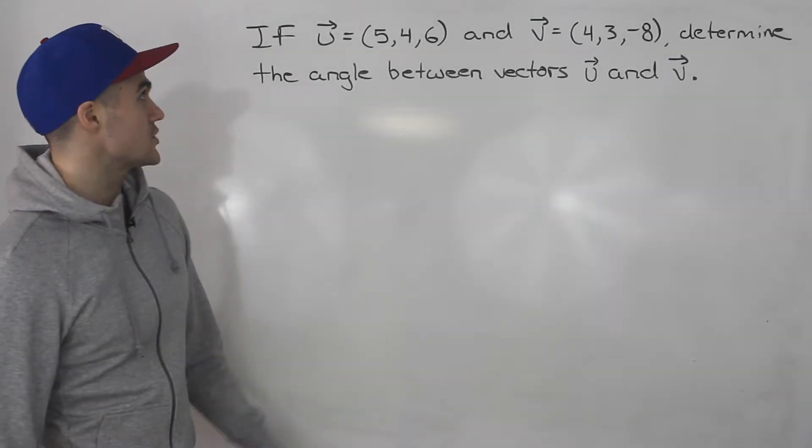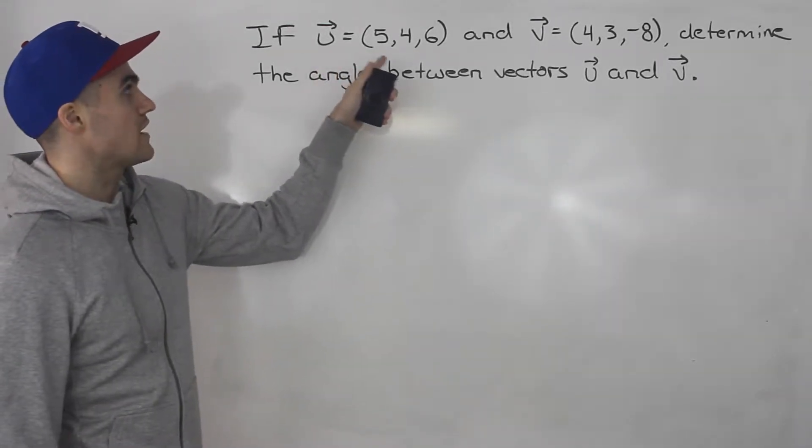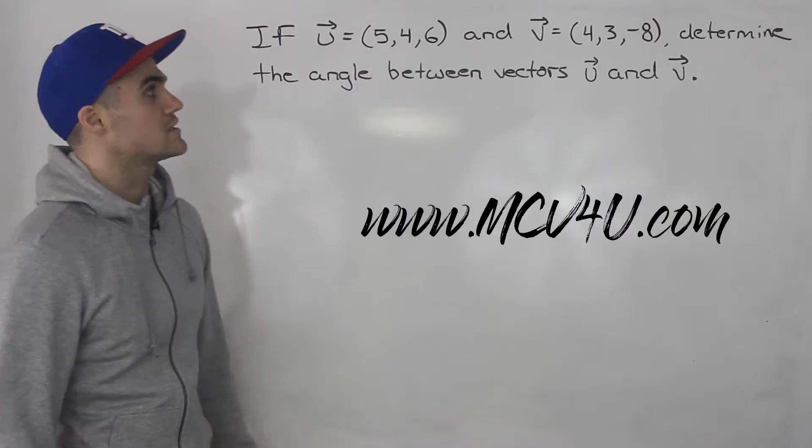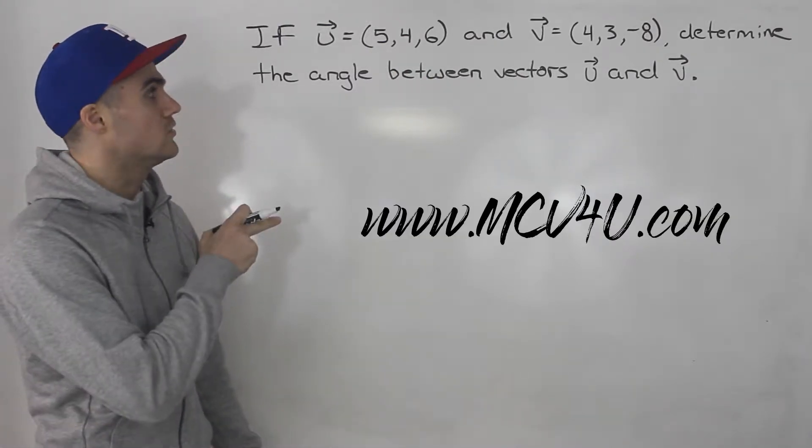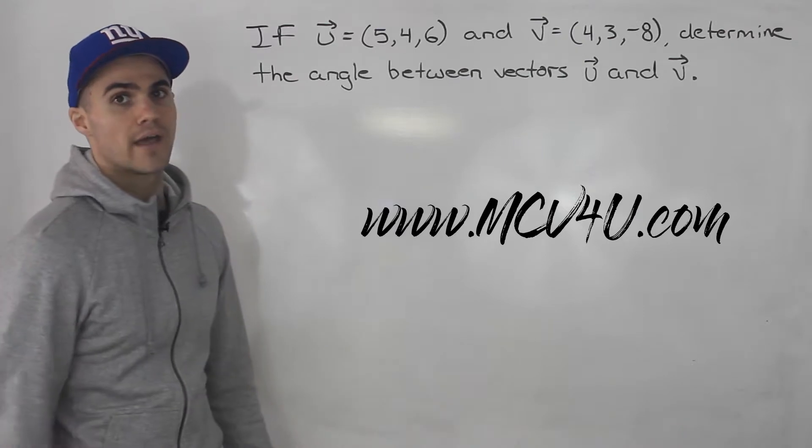Welcome back everybody. Moving on to the next question. If vector u is equal to 5, 4, 6 and vector v is 4, 3, negative 8, we've got to determine the angle between vectors u and v.